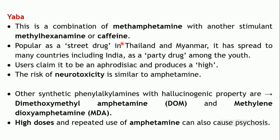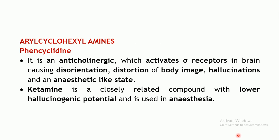Apart from natural sources, there are also synthetic phenylalkylamines with hallucinogenic properties, such as dimethoxyamphetamine and methylenedioxyamphetamine. Even the amphetamines used as CNS stimulant drugs can, at higher doses, produce a similar psychosis-like effect. The next class is the anticholinergic alkoxyamphetamines — phencyclidine is the example. It is an anticholinergic drug which can also activate delta receptors, which are opioid receptors in the brain.